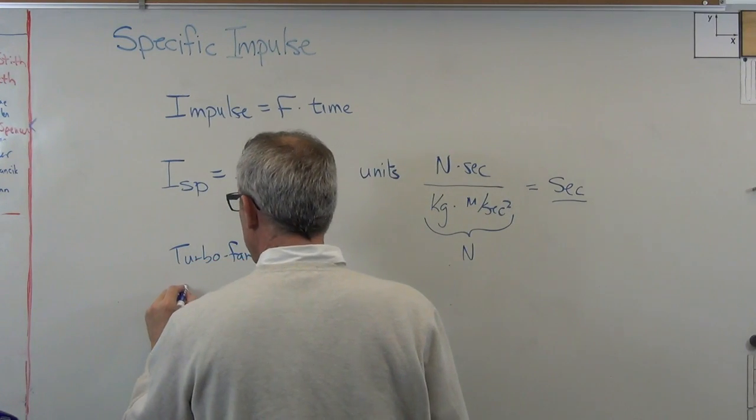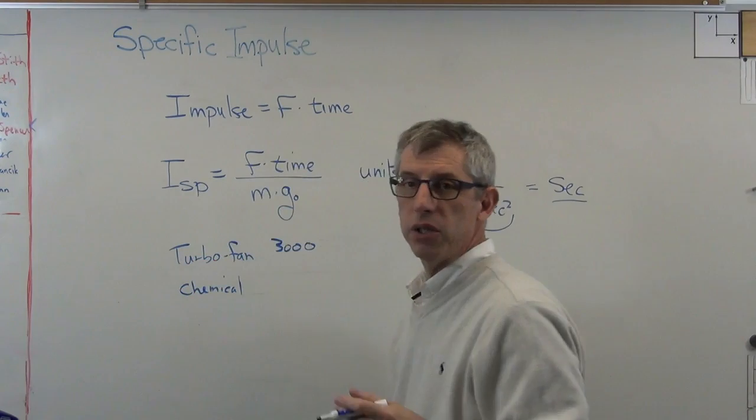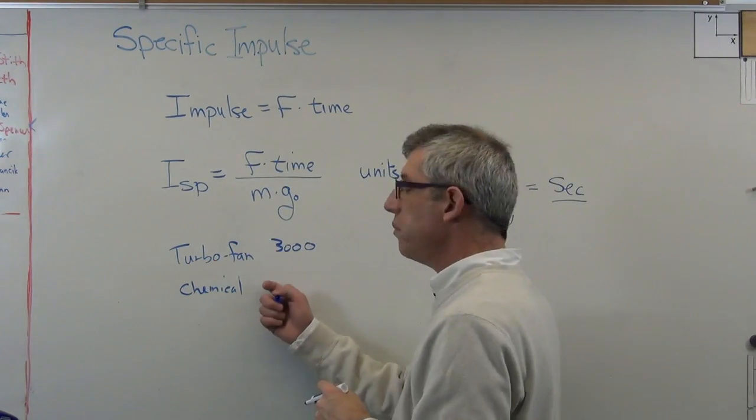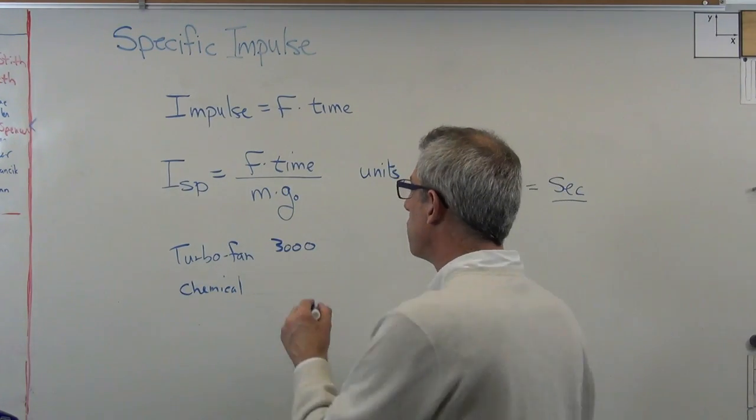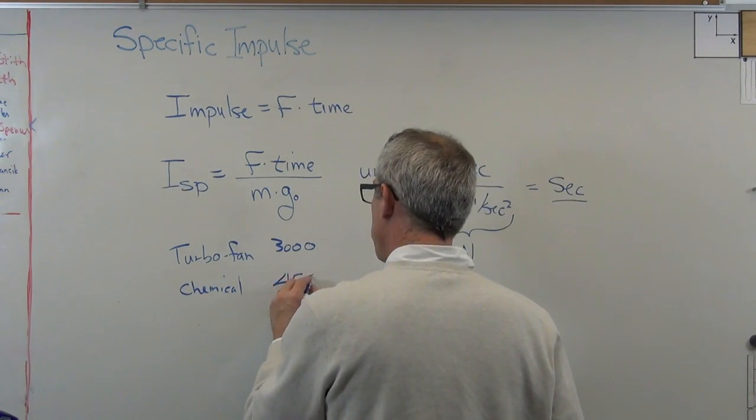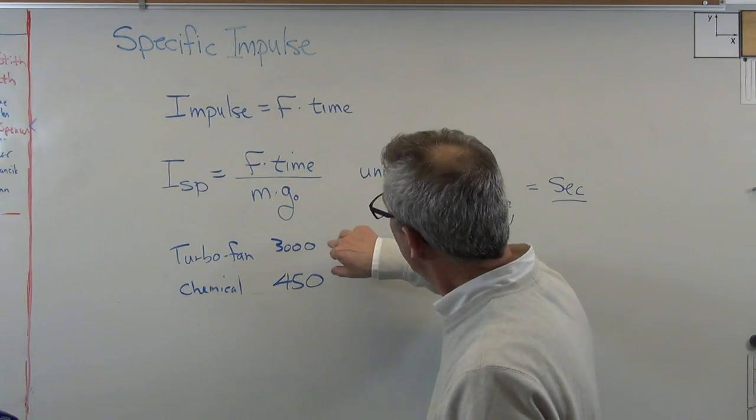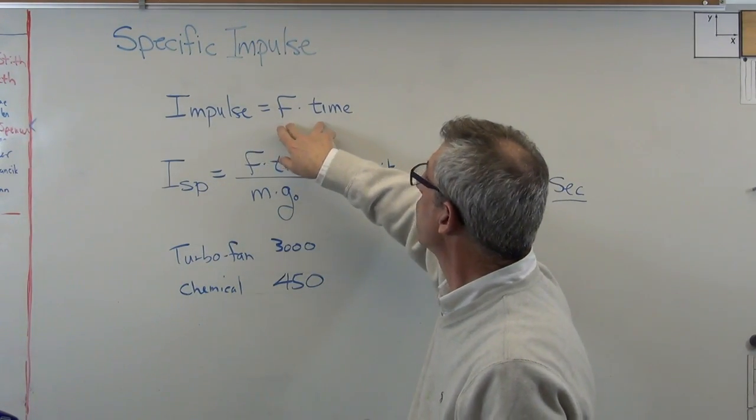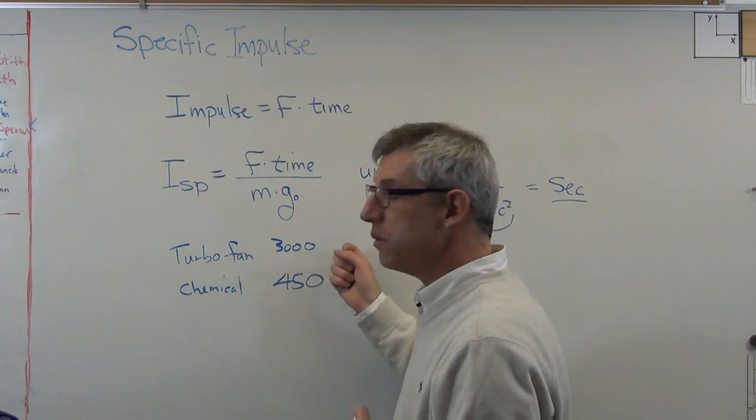Next one is a chemical rocket like the space shuttle main engines ran on liquid hydrogen and liquid oxygen. This one matters. It depends on whether you're in the atmosphere or in a vacuum. This number is for a vacuum, and that's about 450 seconds. So the difference between these two numbers, a turbo fan gets a lot more impulse, a lot more force times time, per unit fuel weight than a rocket does. It's more efficient.